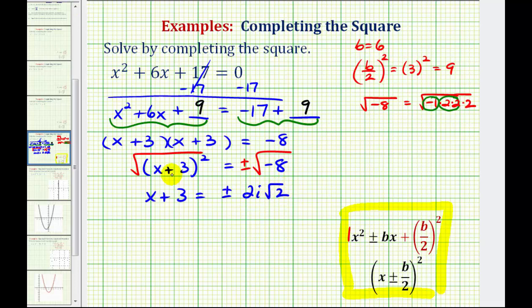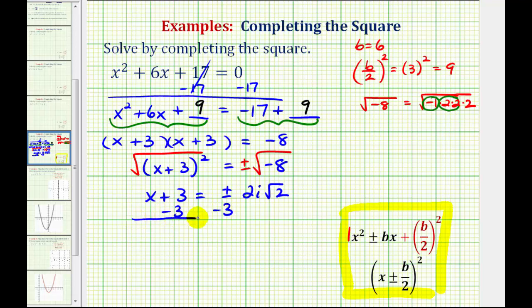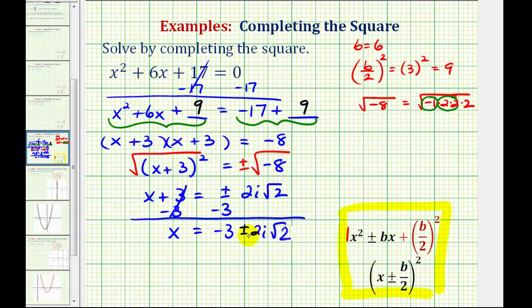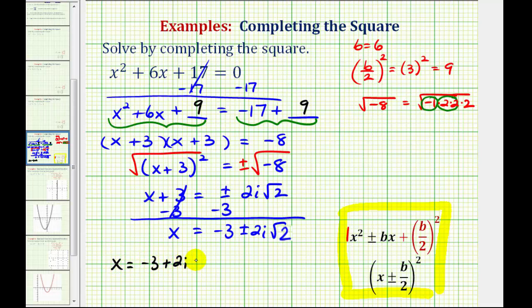And the last step here to solve for x, we'll subtract 3 on both sides. We have x equals negative 3 plus or minus 2i square root 2. So remember we have two solutions here. One is x equals negative 3 plus 2i square root 2. And the other solution is x equals negative 3 minus 2i square root 2.